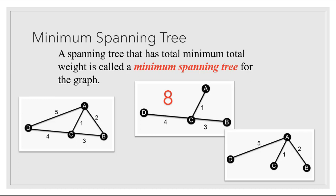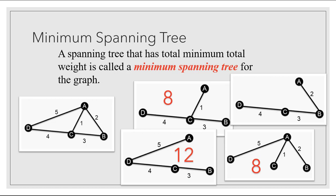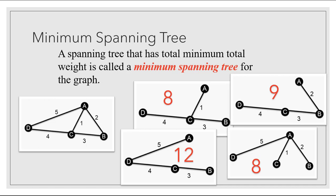Here's another example of a spanning tree for the original graph. It has the same number of vertices and edges, and the same characteristics of being connected and having no circuits. It also has a weight of eight — five plus one plus two is a total weight of eight. Here's another spanning tree for the same graph; its weight is five plus four plus three, or 12. And here's yet another example of a spanning tree with weight four plus three plus two, which equals nine.